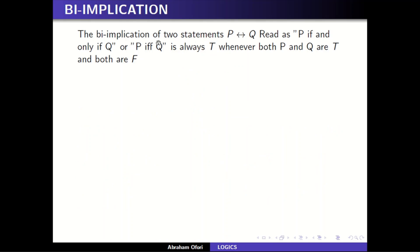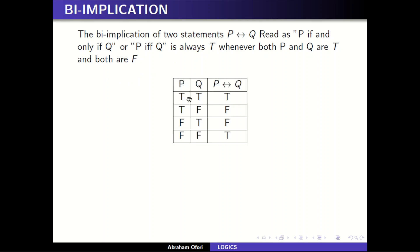The biconditional of two statements, P ↔ Q, read as 'P if and only if Q,' is always true when both P and Q are true and when both P and Q are false. It is like doing the implication in both directions — P implies Q and Q implies P — so the only way it can be true is when both have the same truth value.